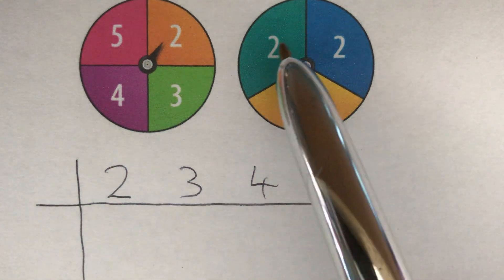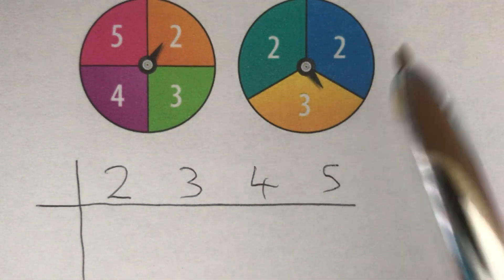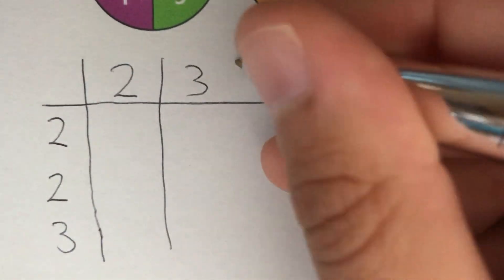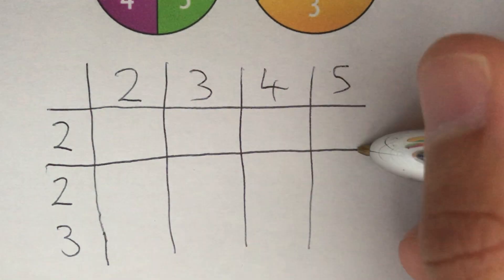Spinner 2, we can get either 2, another 2 or 3. So down the other side of our sample space diagram, we get 2, 2 or 3. And then we'll just complete our diagram, make it a bit more clear.